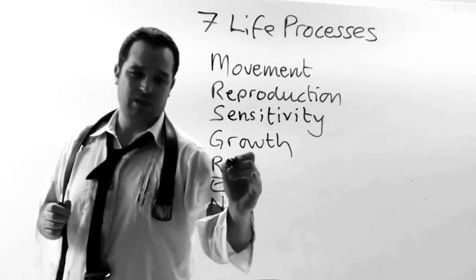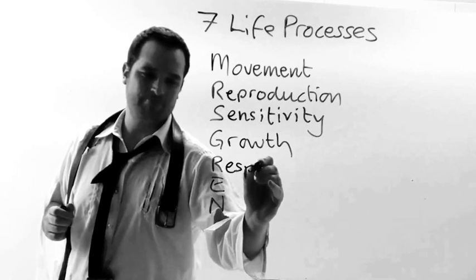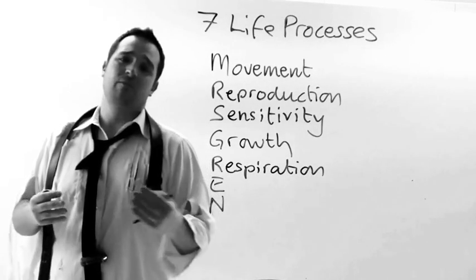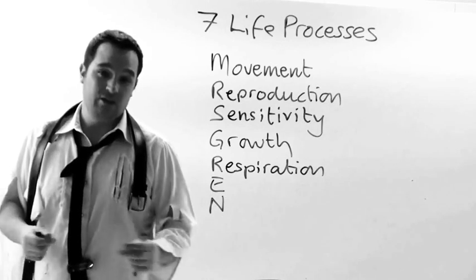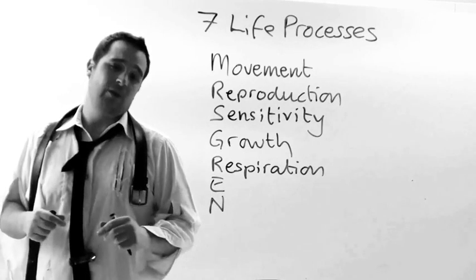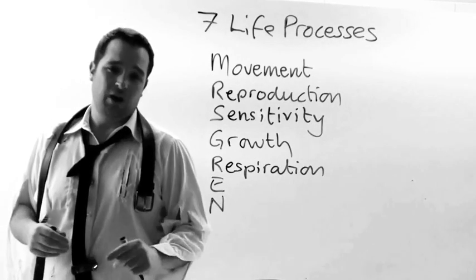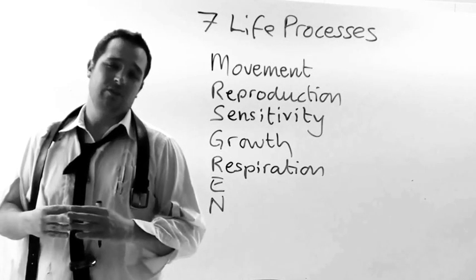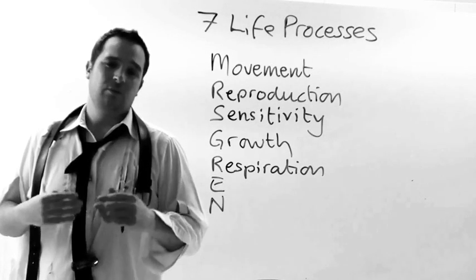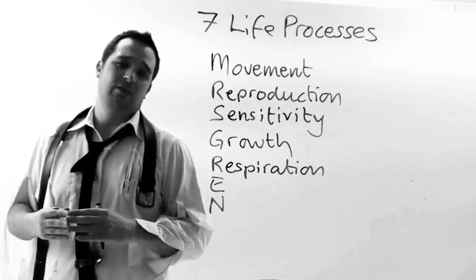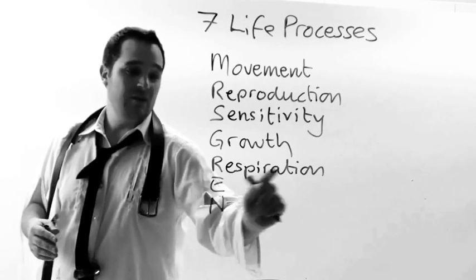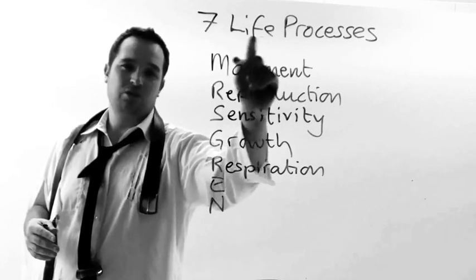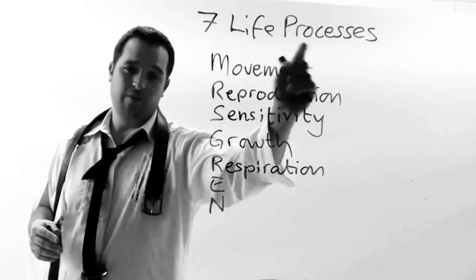The R stands for respiration. This is the mixing of glucose and oxygen to release the energy from within the glucose. Human beings respire, and although we think plants photosynthesise, at night time when there is no sunlight, the plants use the sugar that they've made during the day for respiration. So anything that respires is considered to be alive, because respiration is one of the seven life processes.